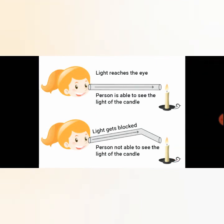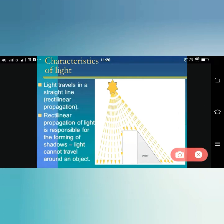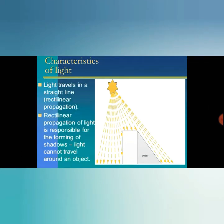Now let's see the characteristics of light. First, light travels in a straight line — this is known as rectilinear propagation of light. Second, rectilinear propagation of light is responsible for the formation of shadow. Also, light cannot travel around an object.